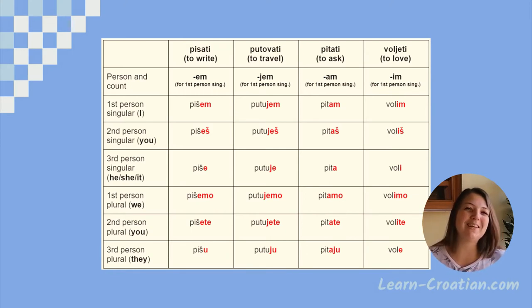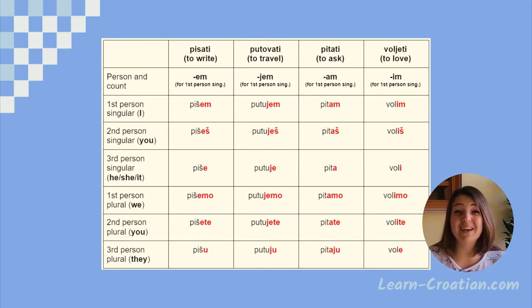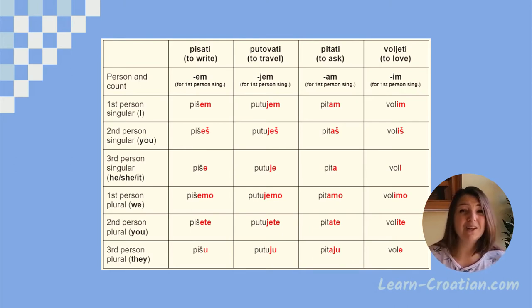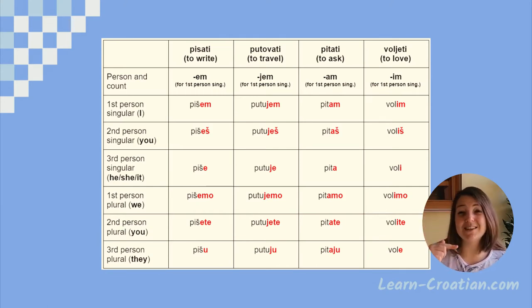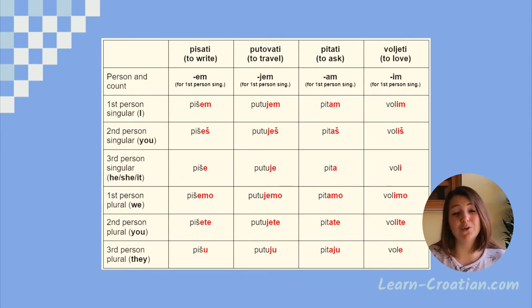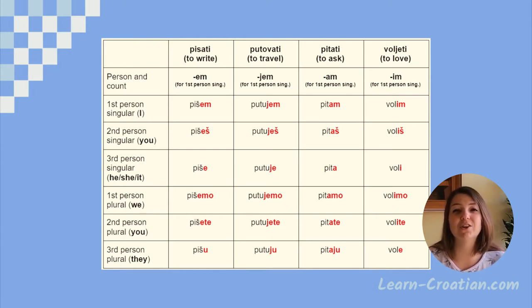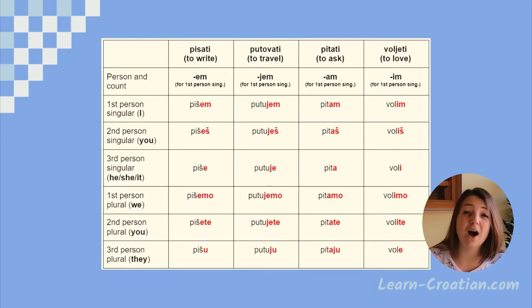Remember what I said at the beginning: when you learn a new verb, it's easiest to learn the infinitive and the first person singular of the present tense, because the first person singular will immediately tell you whether the ending is '-em,' '-jem,' '-um,' or '-im.' If you remember all the other endings for the other persons, it'll be easier for you to conjugate the verb further. So again, the simplest way to learn the present tense: learn the infinitive, learn the first person singular, and then memorize the endings to conjugate the verb.